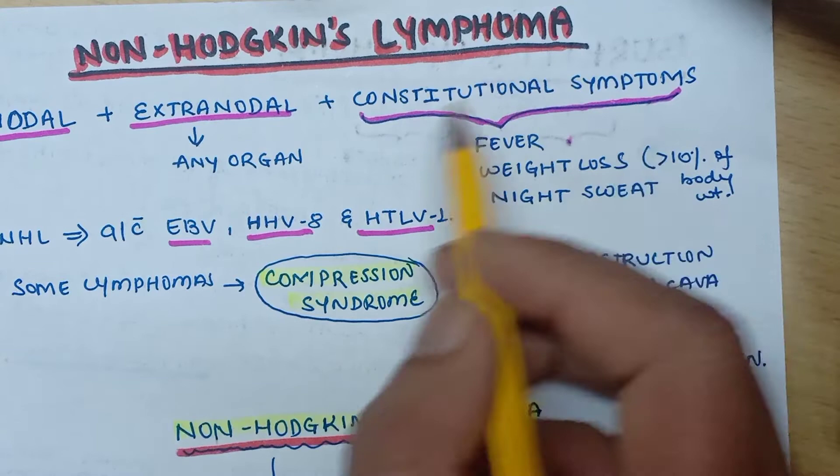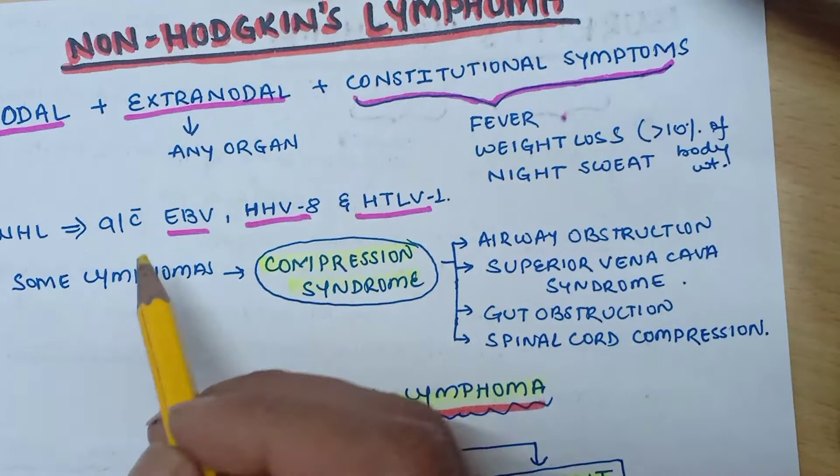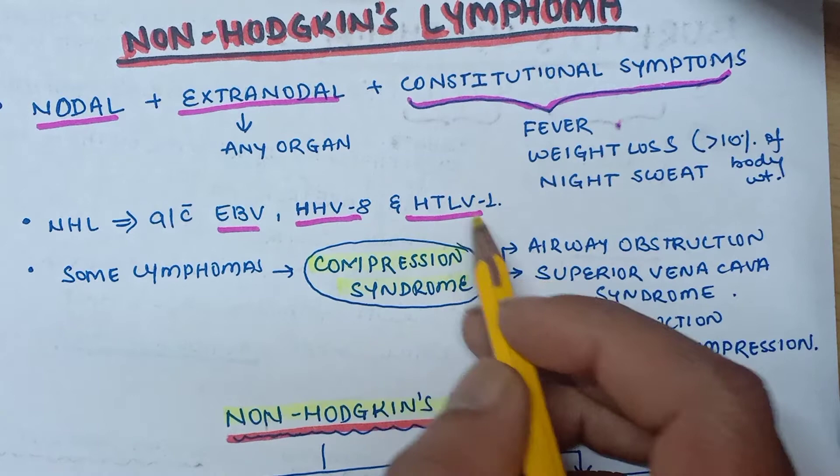Non-Hodgkin's Lymphoma also presents with constitutional symptoms, which include fever, weight loss of more than 10% of body weight, and night sweats. Non-Hodgkin's Lymphoma is associated with Epstein-Barr virus, Human Herpes Virus type 8, and Human T-lymphotropic virus type 1.